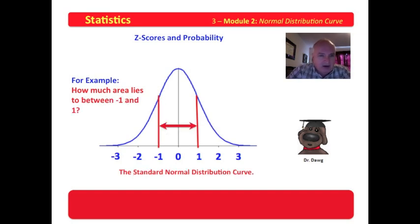How much area lies between minus one and one? Now instead of just one boundary, we're looking for an area between two boundaries. Now let's think just a minute. From the mean to one standard deviation out is 34 percent. From the mean to one standard deviation below is 34 percent. So the area would be 0.34 plus 0.34, or 0.68, or 68 percent. 68 percent of the data lie between one standard deviation below and one standard deviation above.